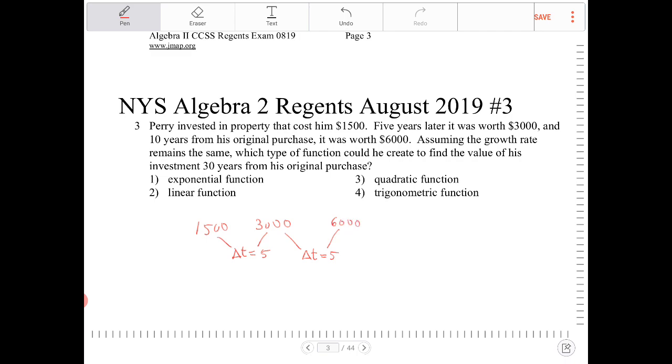Just based on these three data points, we can see very clearly that this progression is geometric. And how do I know that? It's geometric because there's a common ratio of two.